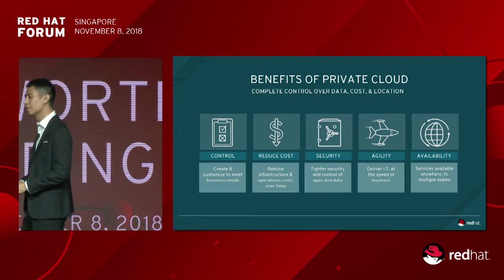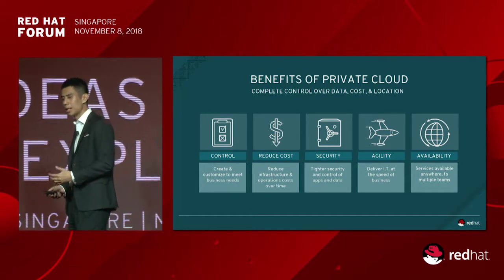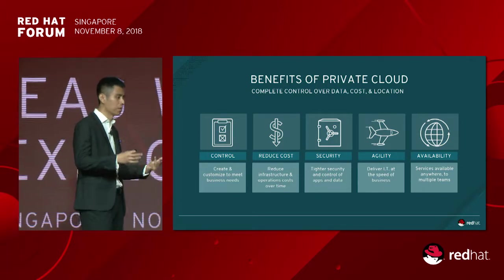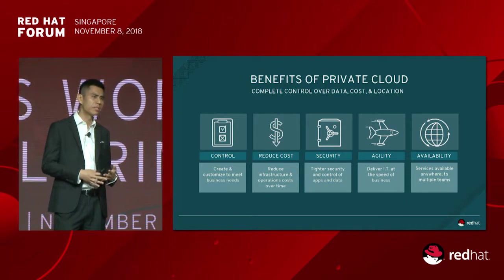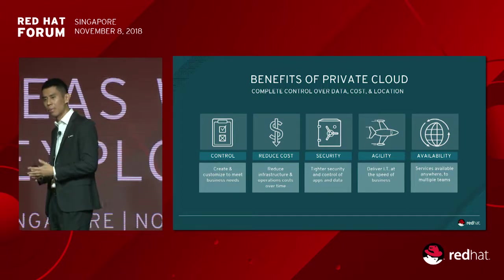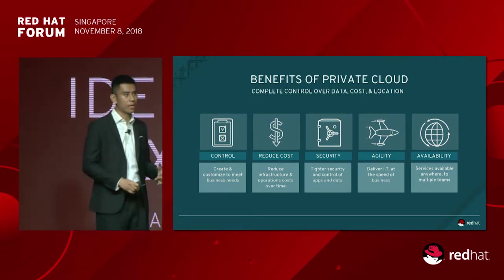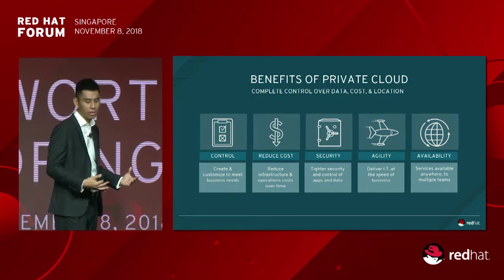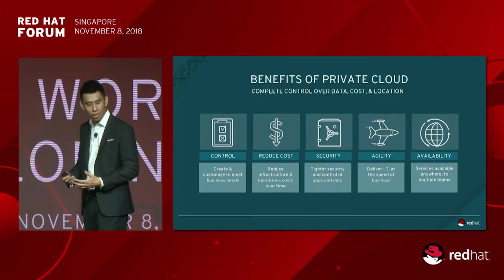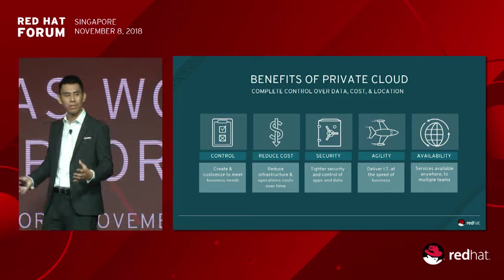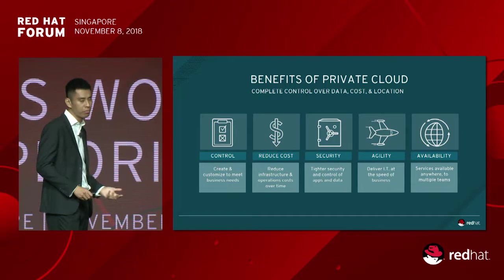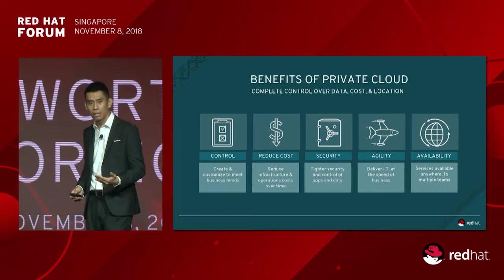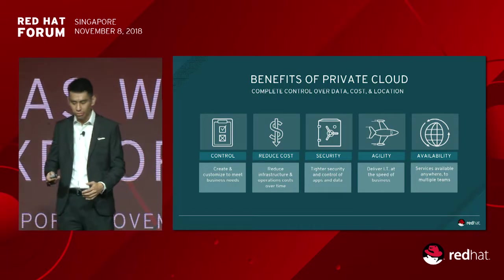Looking at benefits for Red Hat customers — whether FSI, oil and gas, aviation, or commercial companies — OpenStack and private cloud give them better security, better control of applications and data because it's hosted on-premise with existing security policies and governance in place. This helps them better manage costs. Private cloud also provides agility by scaling on demand, giving more or fewer compute resources to meet business needs across multiple lines of business.